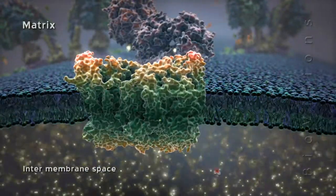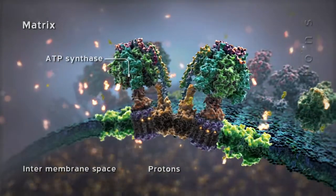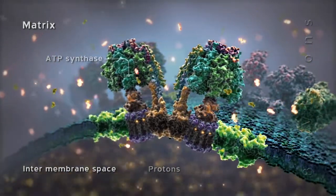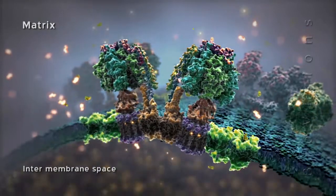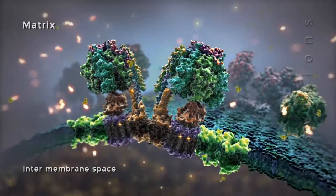Electron transport in complexes 1, 3, and 4 is coupled with the pumping of protons from the matrix to the intermembrane space. The resulting electrochemical gradient across the inner membrane is called the proton motive force.